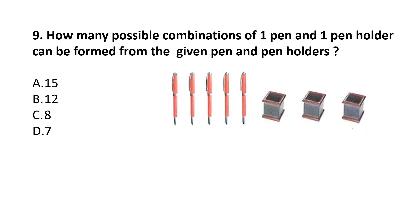Question number 9. How many possible combinations of one pen and one pen holder can be formed from the given pens and pen holders? There are 4 pens and 3 pen holders. The combinations can be 4 multiplied by 3, that is 12. Our answer is option B — 12.